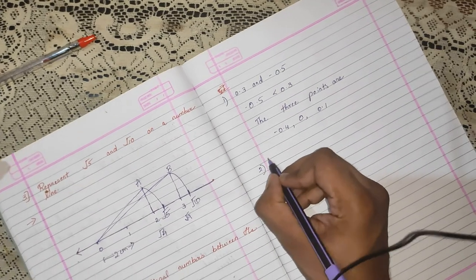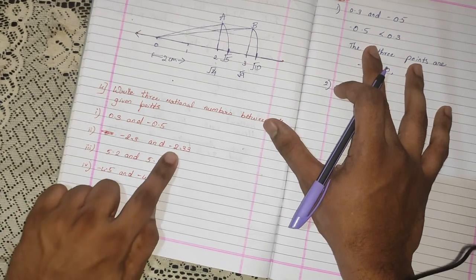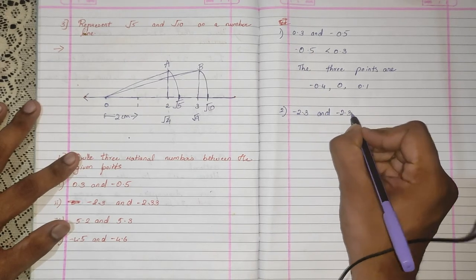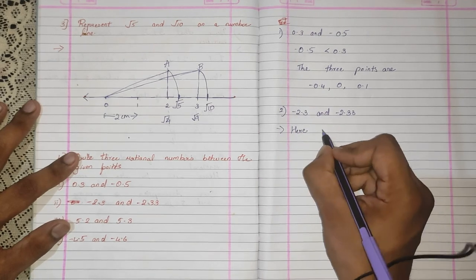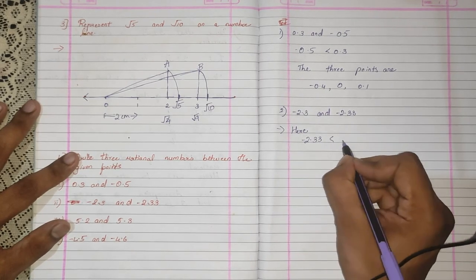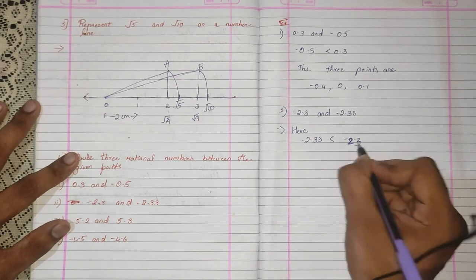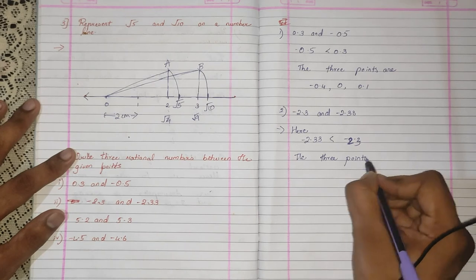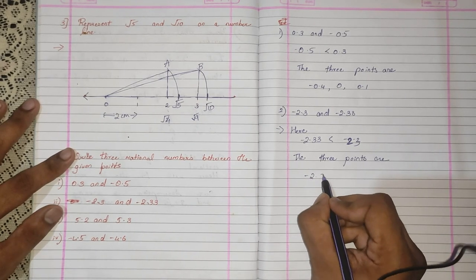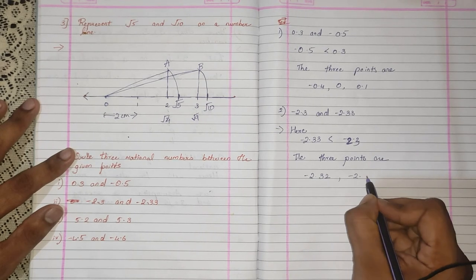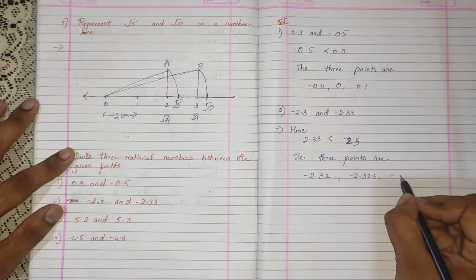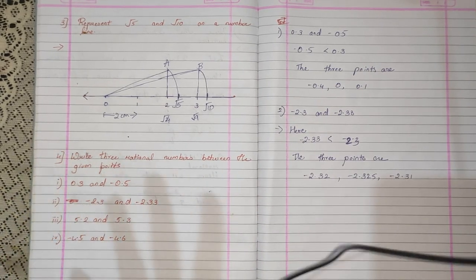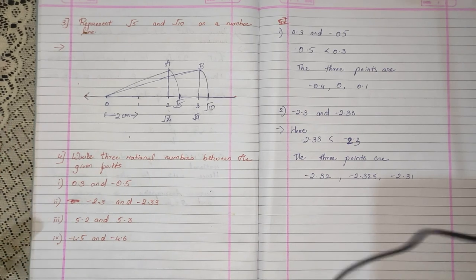The next sub-question is minus 2.3 and minus 2.33. Here minus 2.33 is smaller than minus 2.3. The 3 rational points can be minus 2.32, minus 2.325, minus 2.31, it can be minus 2.315, minus 2.317, or any other value. Again the possibilities are innumerable.